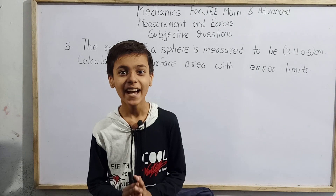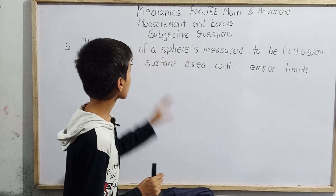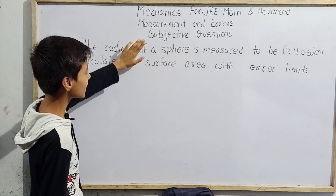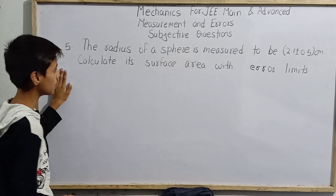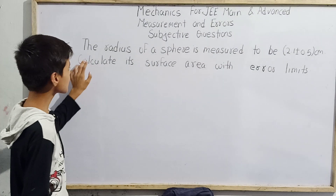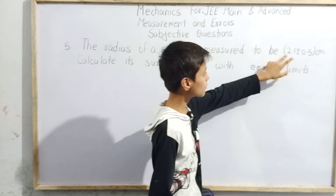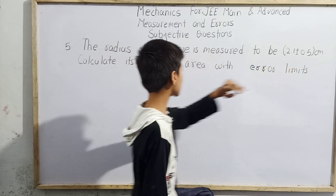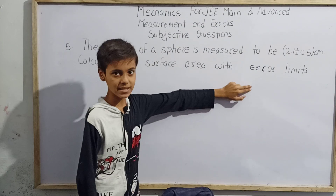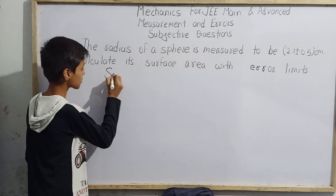Hello students, I am Sarim Khan studying fifth standard, and today we have mechanics for JEE Main and Advanced — measurement and error subjective questions, question number five. The question asks us: the radius of a sphere is measured to be 2.1 plus minus 0.5 centimeters. Calculate its surface area with error limits.